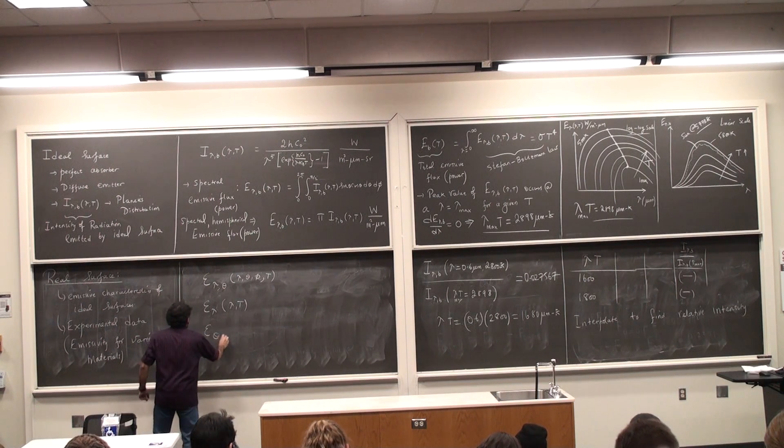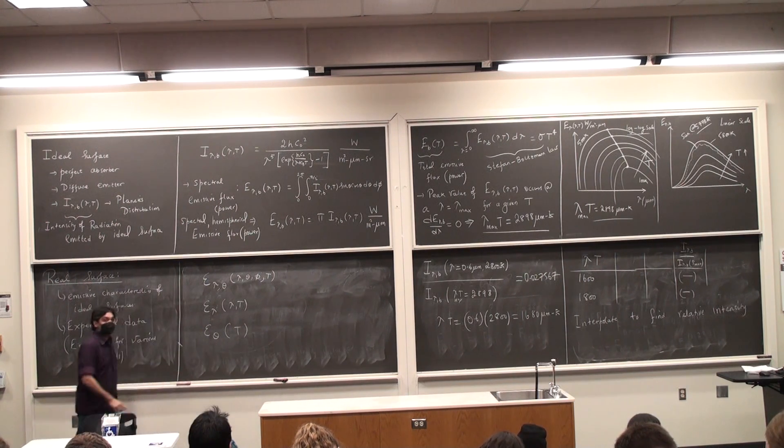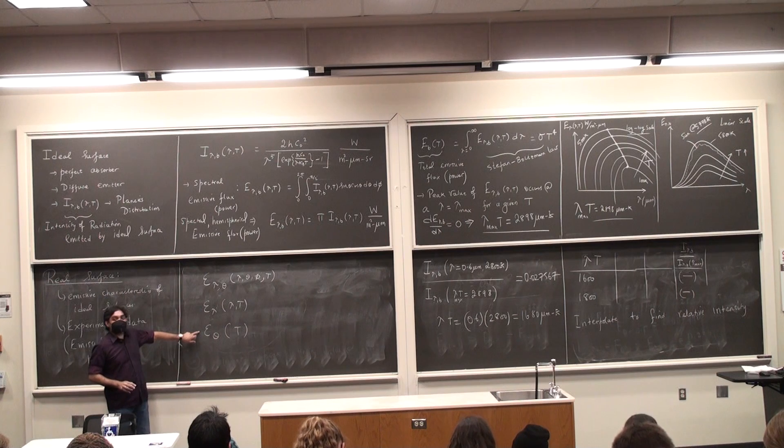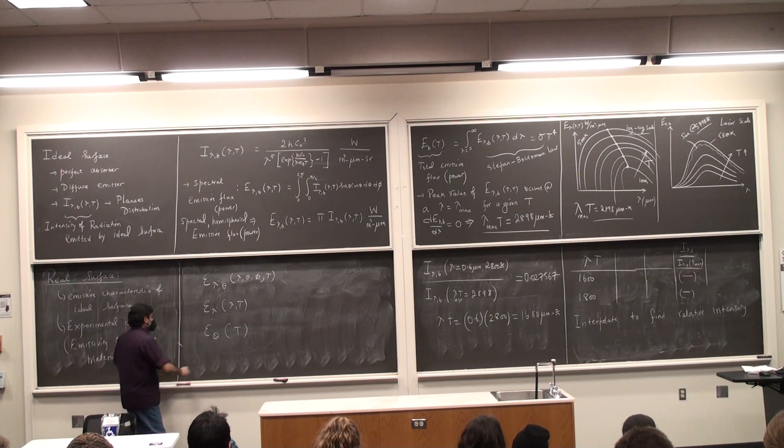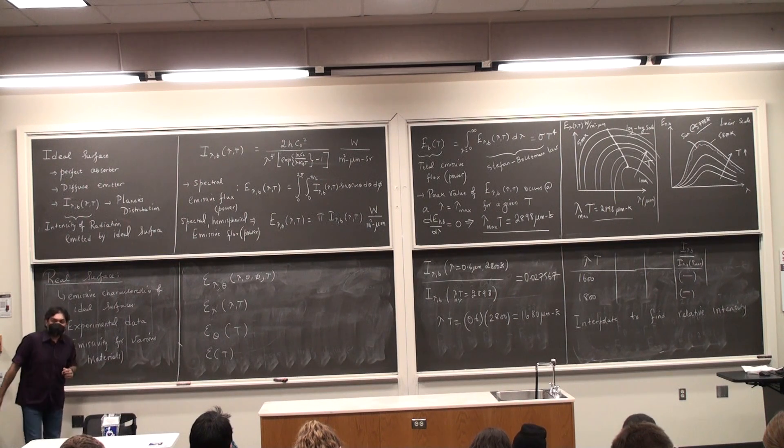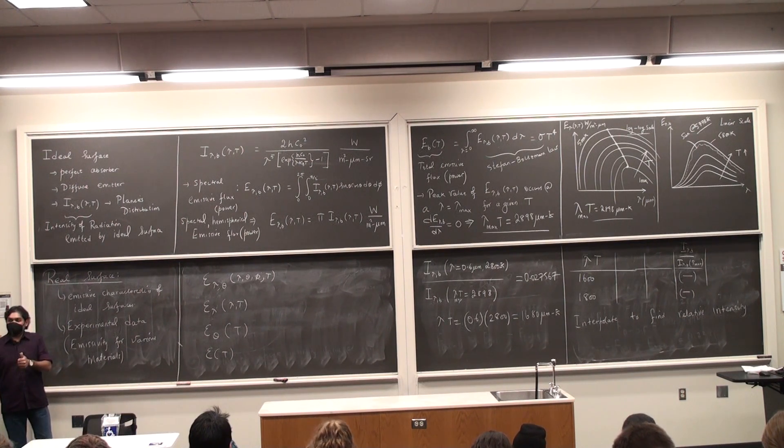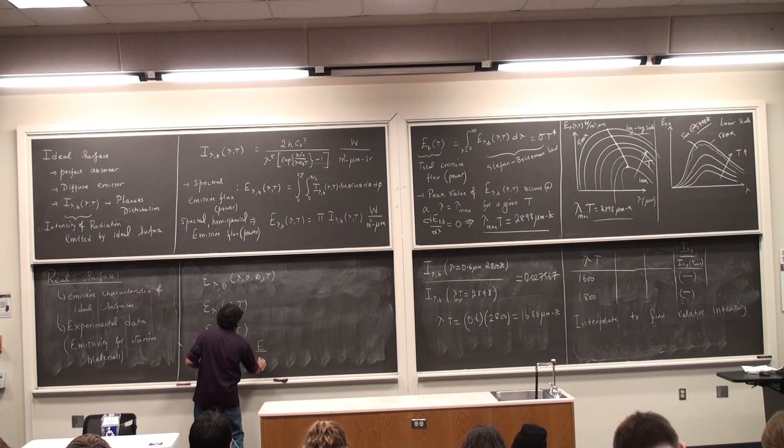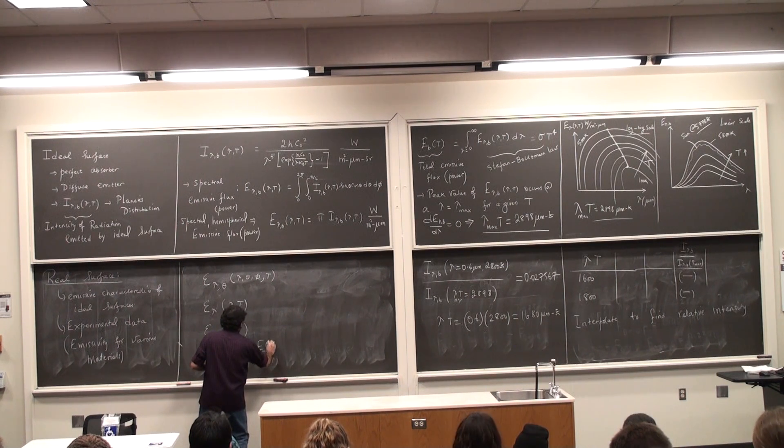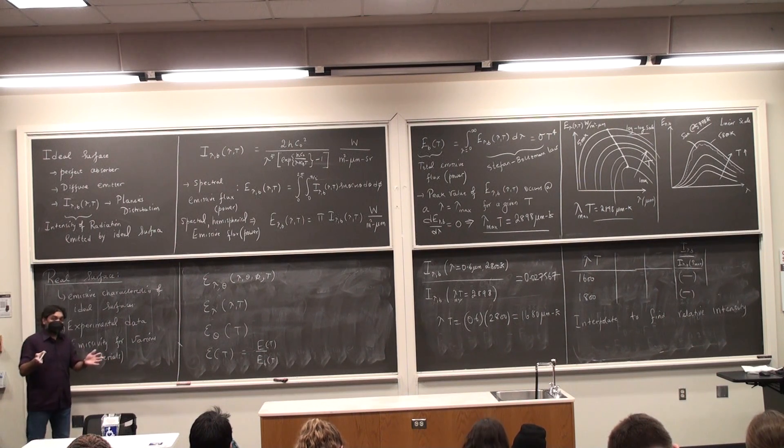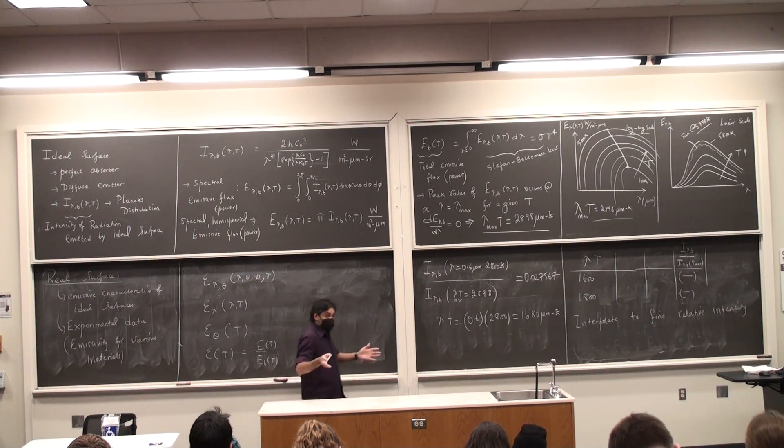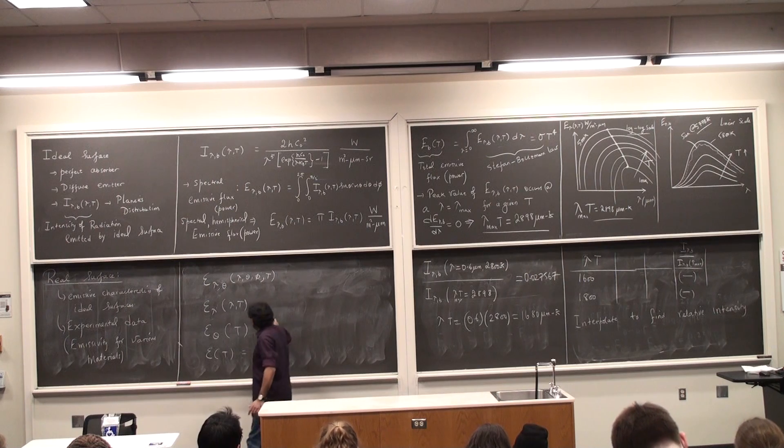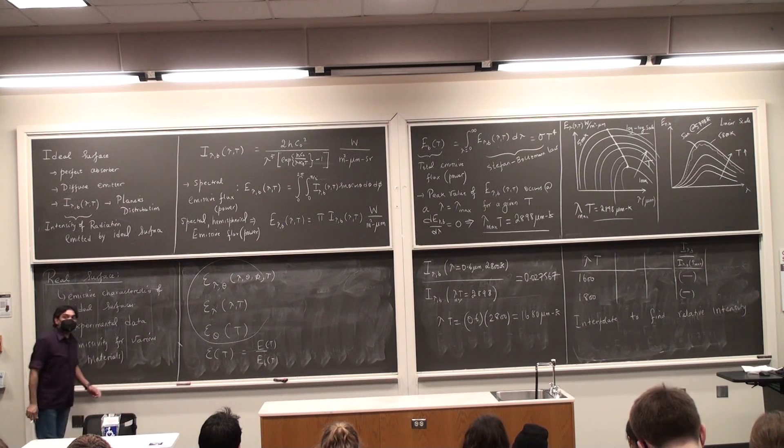Third one is epsilon theta of t, not a function of wavelength, it's a function only of the direction. So this is called total directional emissivity and the mother of all things which is what we are seeking is epsilon t. This is the total emissivity. If I know epsilon, then I can say this is E divided by E_b. E is the emissive power of a real surface. E_b is the emissive power of an ideal surface which is sigma times t to the power 4. If I can somehow find epsilon of t using any one of these three or any two of these three, then I am good to go.